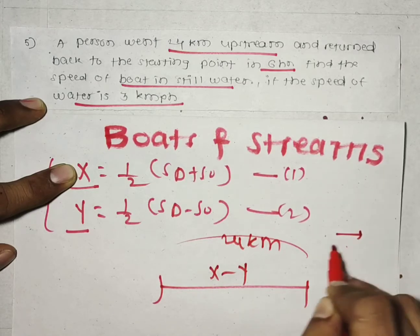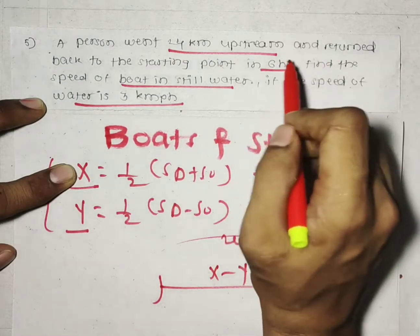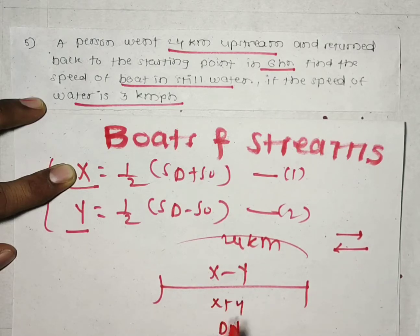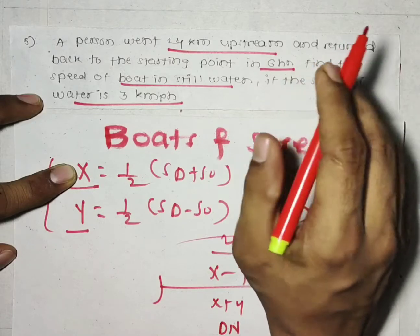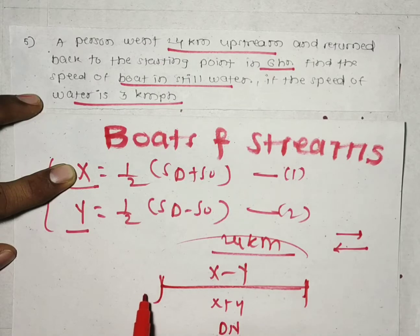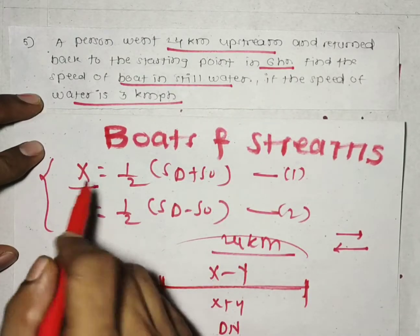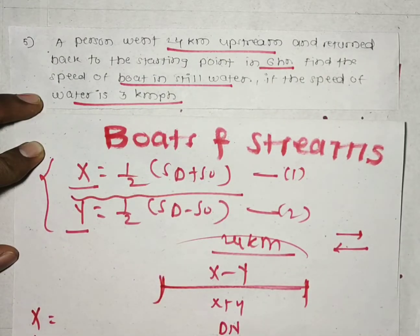If the boat is going upstream, the direction of water flow is opposite, so the upstream speed is x minus y. While returning back to the starting point, the speed will be downstream, which is x plus y. The distance while coming back is also 24 km. He took a total of 6 hours to cover 24 km upstream and return to the starting point downstream. We have to find x, and y is given as 3 km per hour.